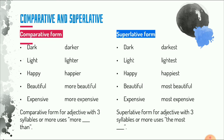The last topic is comparative and superlative adjectives. For comparative adjectives, we change: 'dark' to 'darker,' 'light' to 'lighter,' and 'happy' to 'happier.' But 'beautiful' becomes 'more beautiful' because for adjectives with three syllables or more, we use 'more' before the adjective. In a sentence, for example: 'Lily is more beautiful than Tinny.'